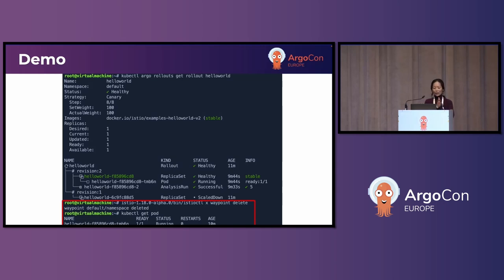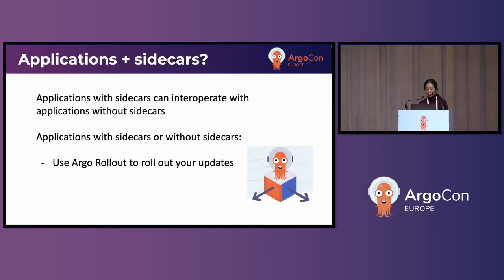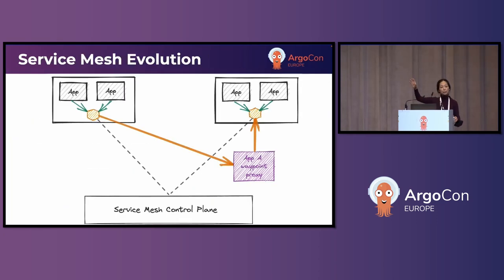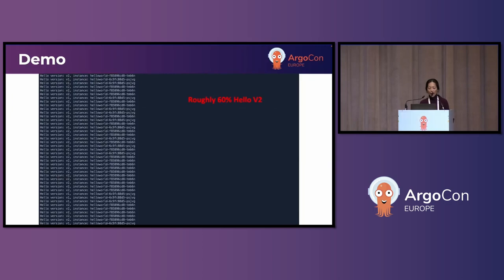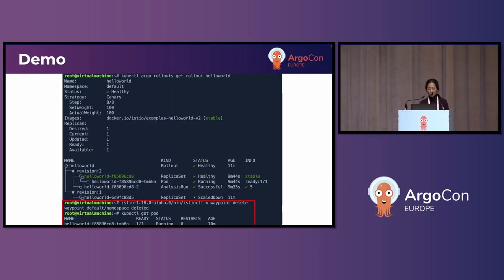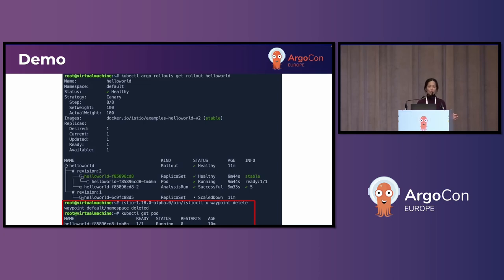One thing I want to highlight that is new with ambient: I actually deploy a Waypoint proxy. We talked about the Waypoint proxy architecture briefly — it's the key component that handles layer 7 traffic management and layer 7 traffic enforcement. So before I started my rollout, I deployed the Waypoint proxy to facilitate that traffic shifting. At the end, after rolling out to version two, I no longer need the Waypoint proxy, so I no longer need to pay the cost to run and operate it — I can actually remove it. This is very different from sidecar, where you can't remove it; the sidecar stays with you regardless, even after a successful rollout.